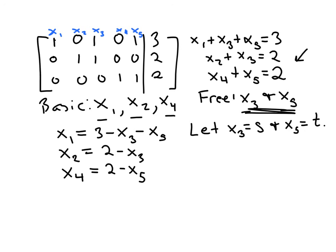Well, then the solution set is going to look like this. x1 is equal to 3 minus x3, which is s, minus x5, which is t now. x2 is equal to 2 minus x3, which is now represented by the parameter s.